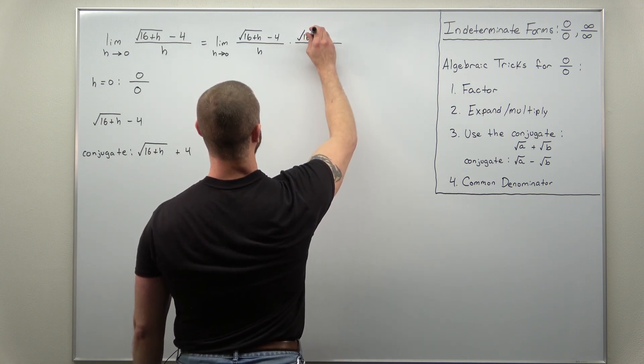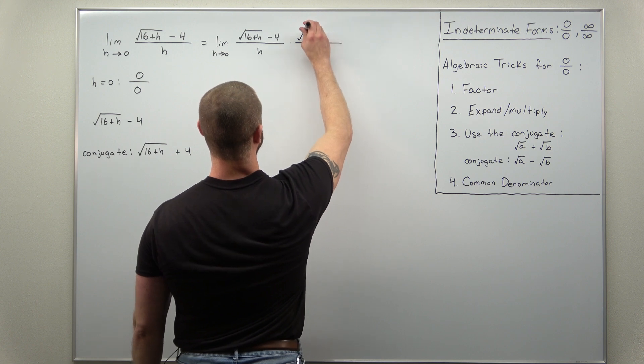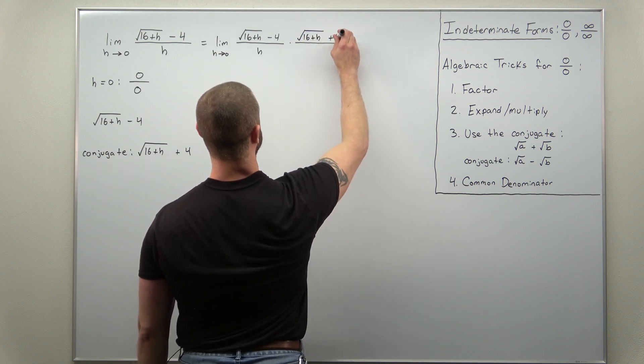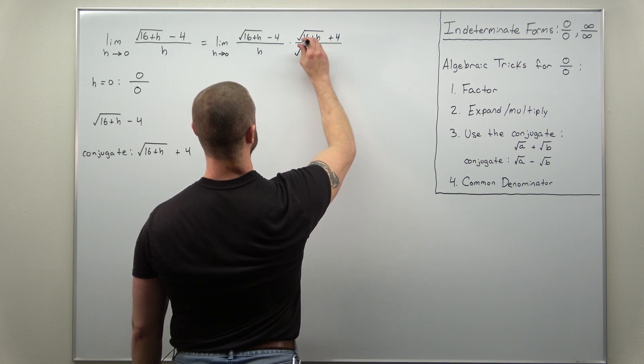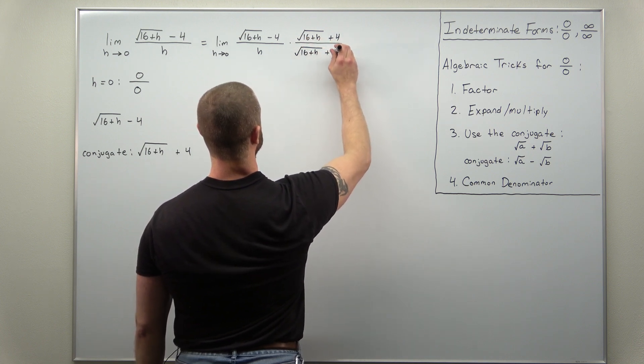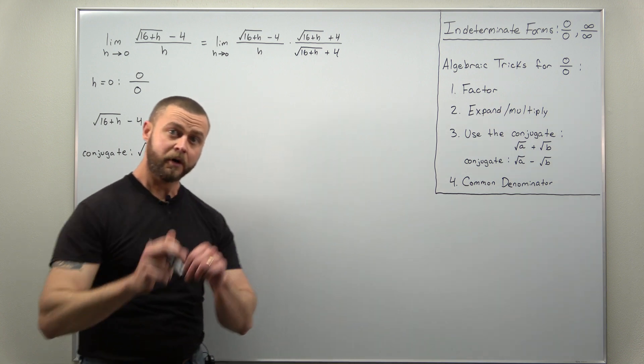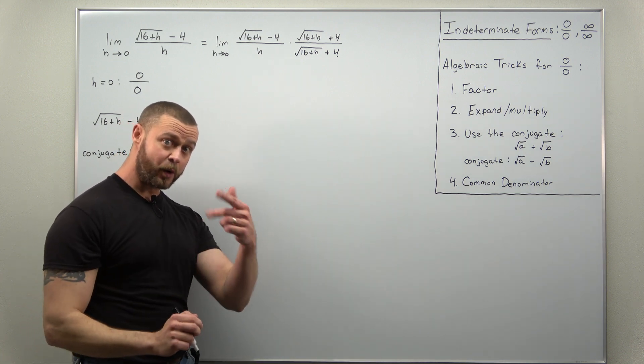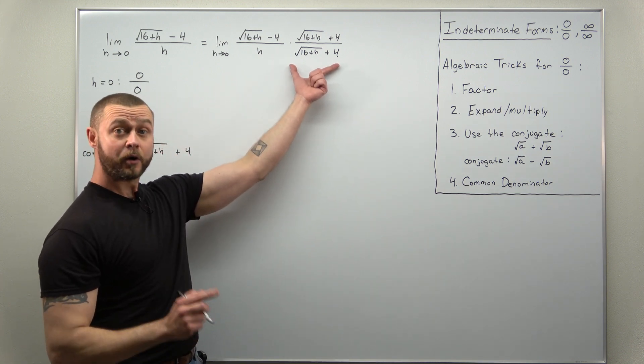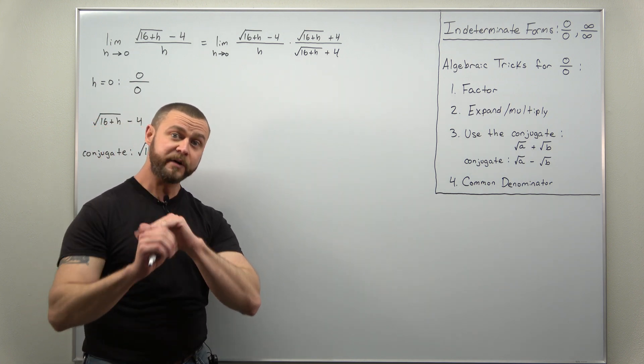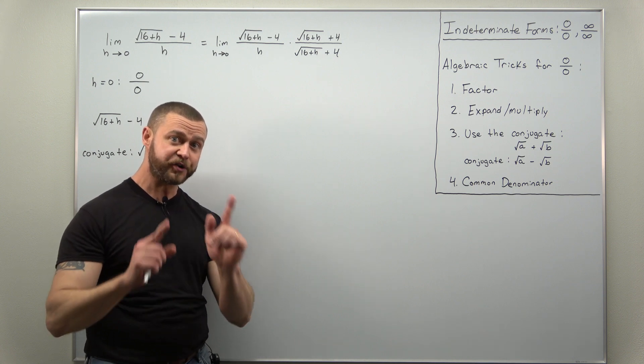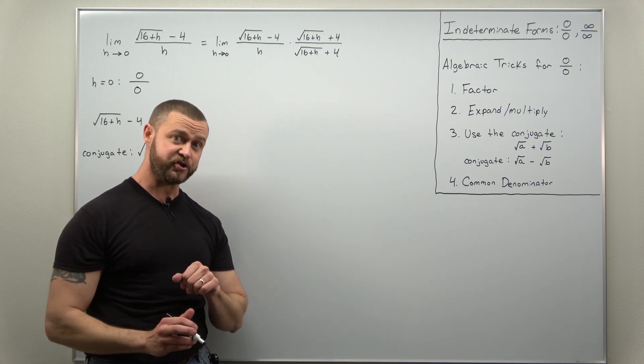So the numerator is being multiplied by the square root of 16 plus h, but plus 4. And we're multiplying the denominator by the same thing. Alright, and it's worth pointing out algebraically what we're doing here. Here, we're multiplying by 1, which is allowed algebraically. You can always multiply a quantity or expression by 1, and it doesn't change it.